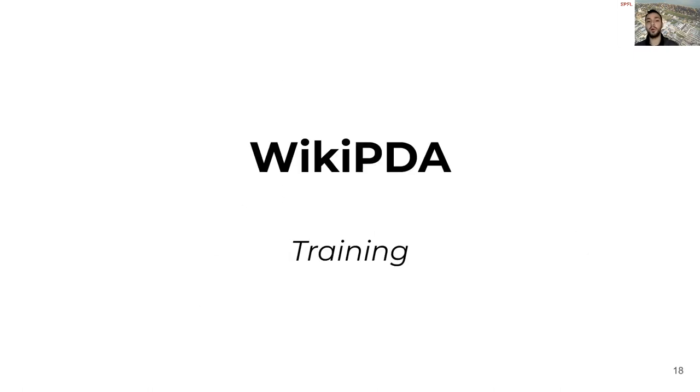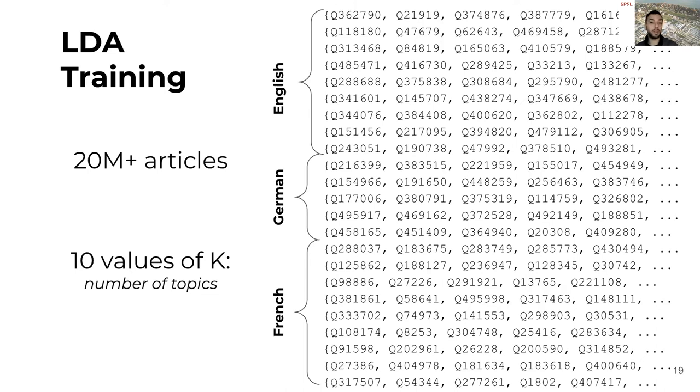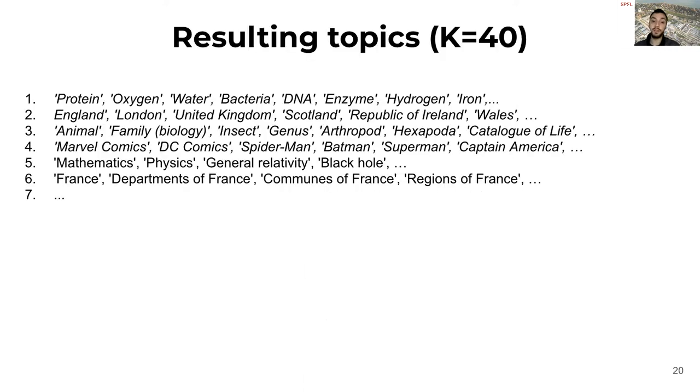At this point, we can proceed with the training of the model. We have a representation of more than 20 million articles in 28 languages, and we run LDA by using this bag of links as part of the same corpus. Since LDA is parametric, we train 10 models by varying the number of topics. In this example, we can see the top entities representing some of the topics in one of the models that we train.